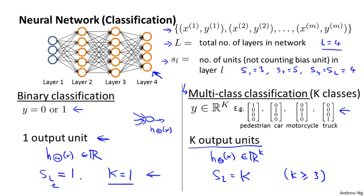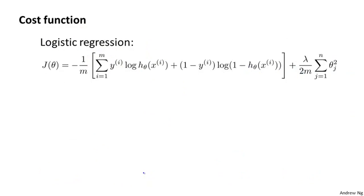Now let's define the cost function for our neural network. The cost function we use for the neural network is going to be a generalization of the one that we use for logistic regression. For logistic regression, we used to minimize the cost function J(θ) that was minus 1 over m of this cost function, and then plus this extra regularization term here, where this was a sum from j equals 1 through n, because we did not regularize the bias term theta 0.